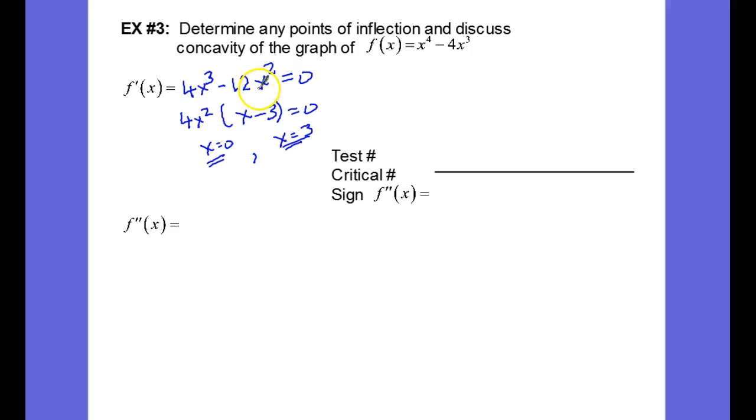Now, let's differentiate this again, and that will be our f double prime. So 3 times 4 is 12x squared minus 2 times 12 is 24x. Again, setting equal to 0 and factoring out a 12x, we are left with x minus 2 in parentheses,